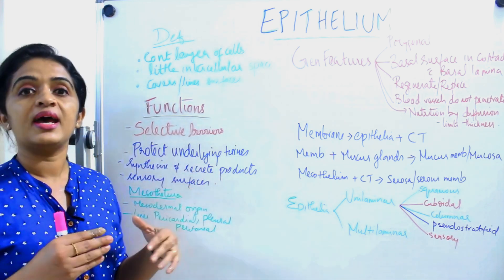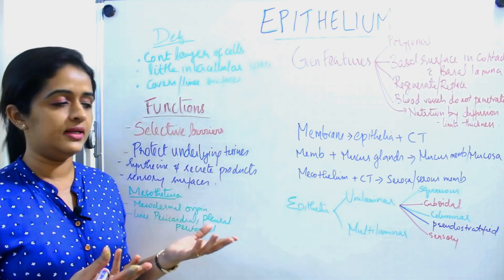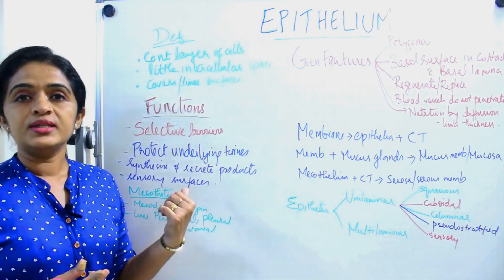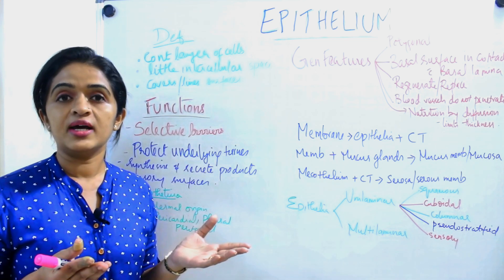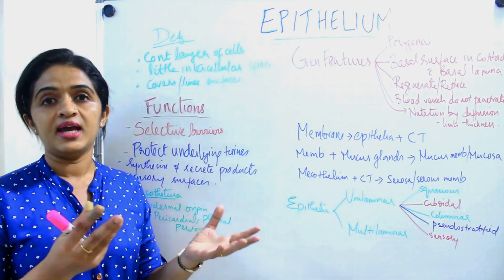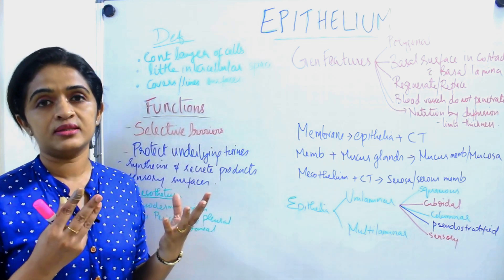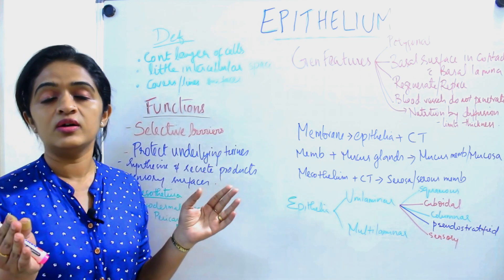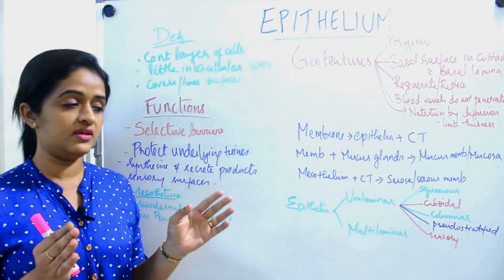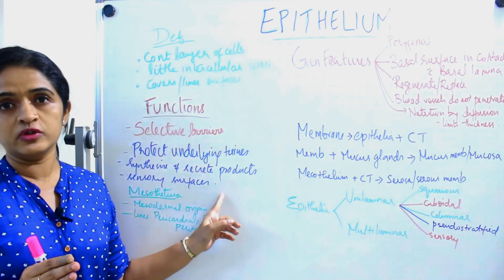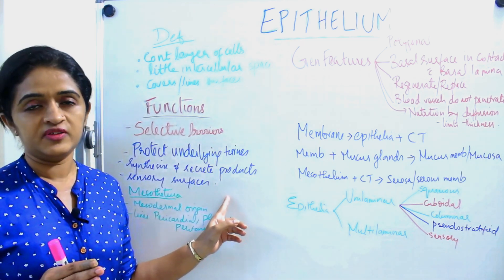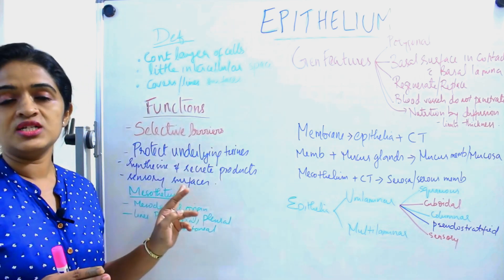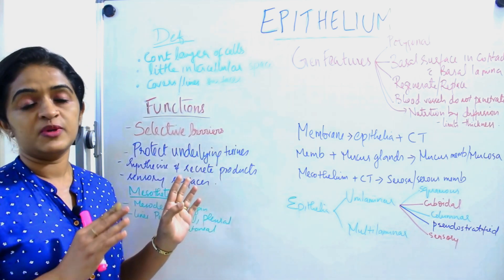The fourth function is that some epithelial cells are specialized and they act as sensory receptors, so they will be seen on the sensory surfaces. That is the fourth function of the epithelium. Now there is a specialized entity which you call mesothelium.